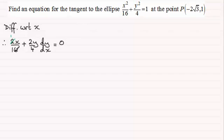We can cancel each of these fractions down. That becomes 1 eighth. That becomes a half. Then rearranging this for dy by dx we end up with dy by dx equaling minus x over 4y.